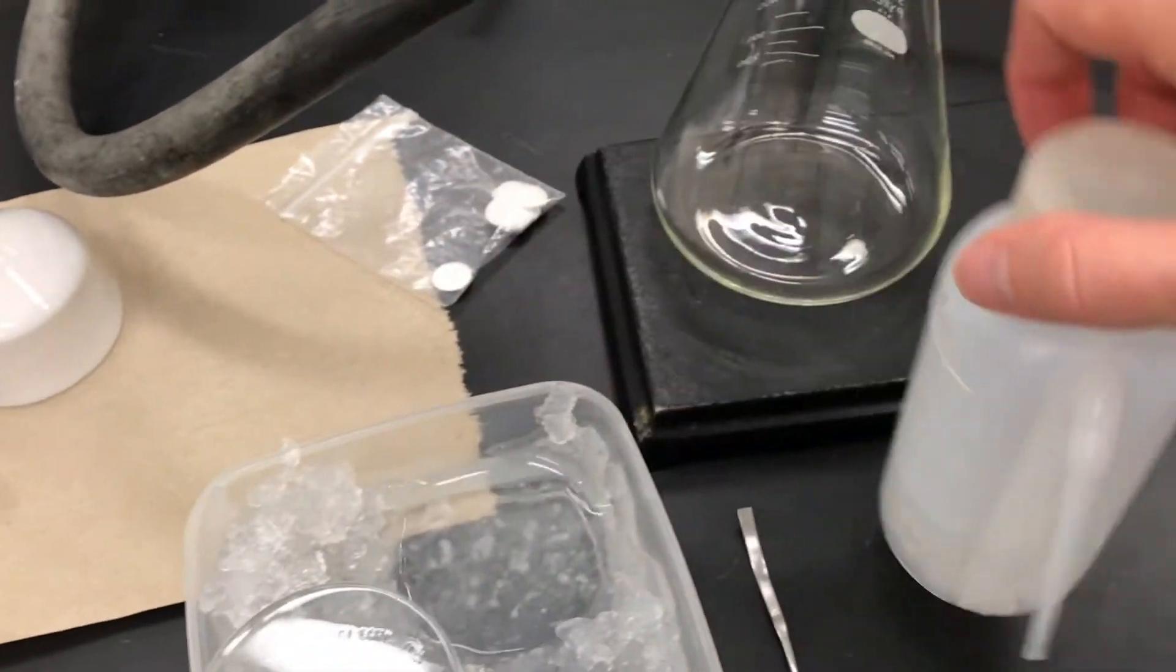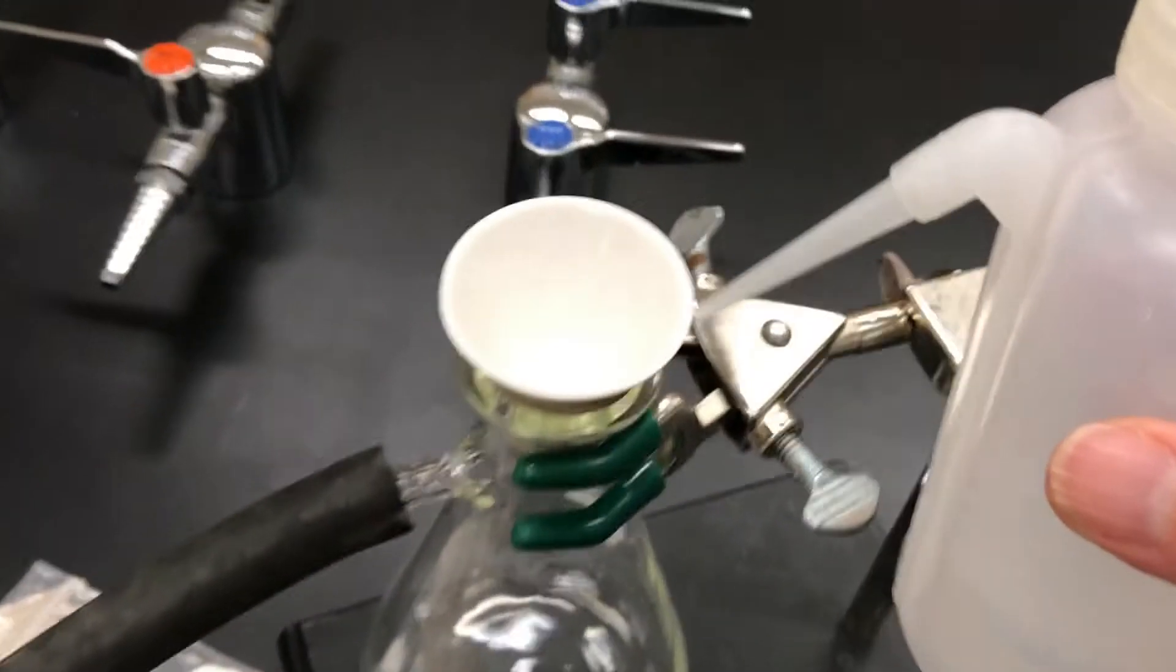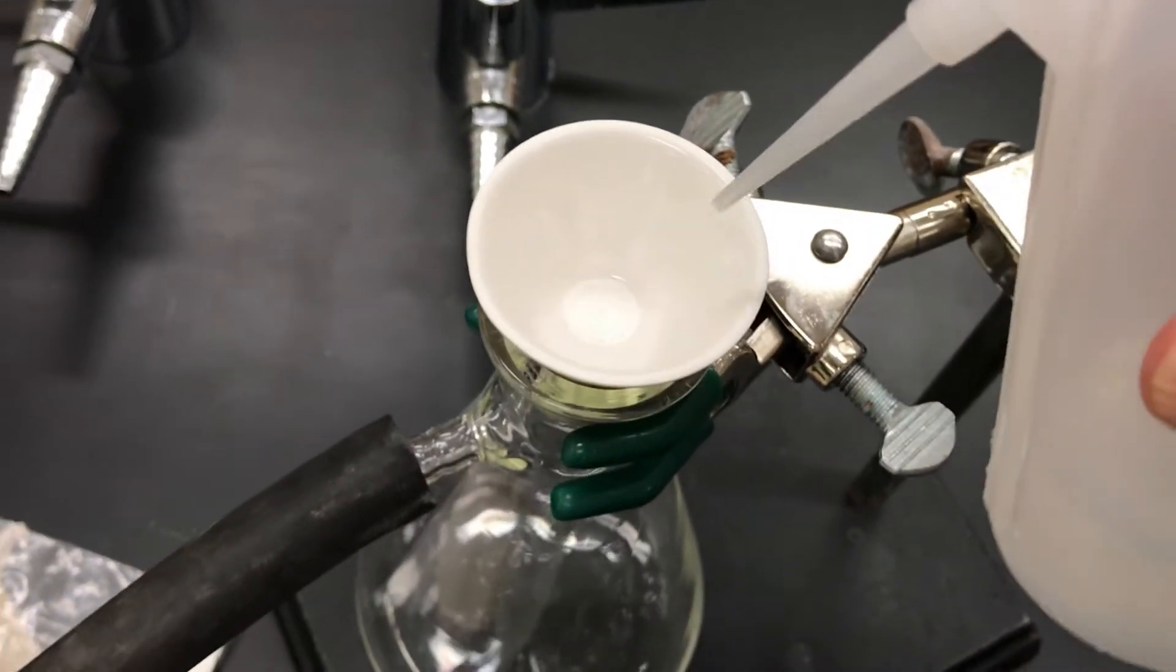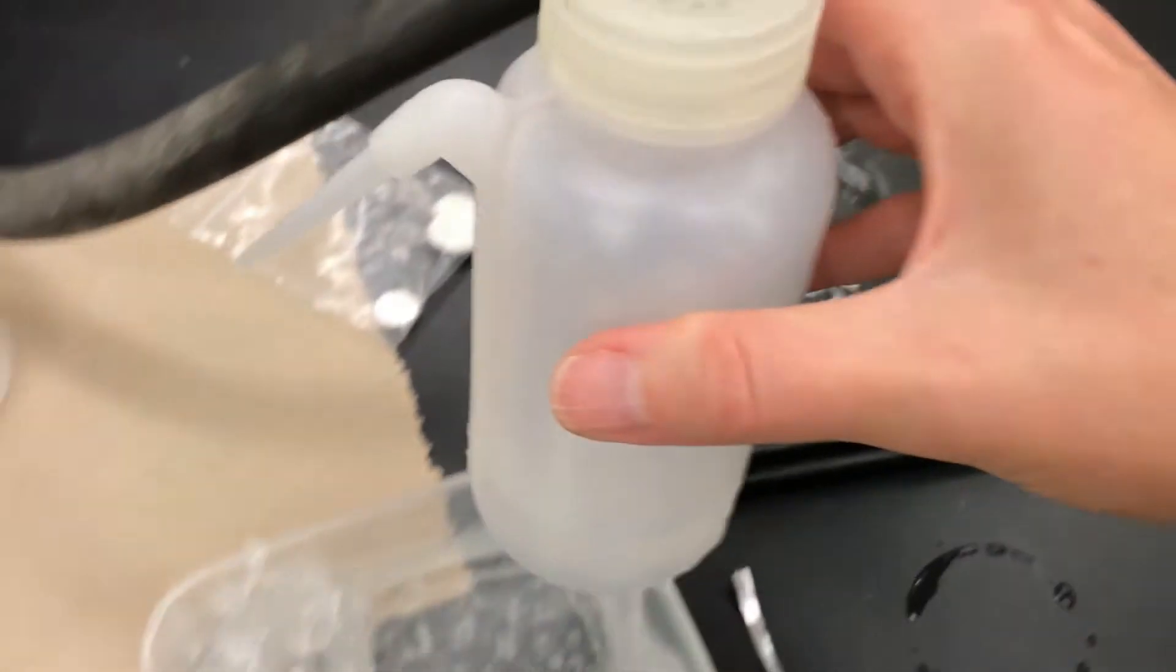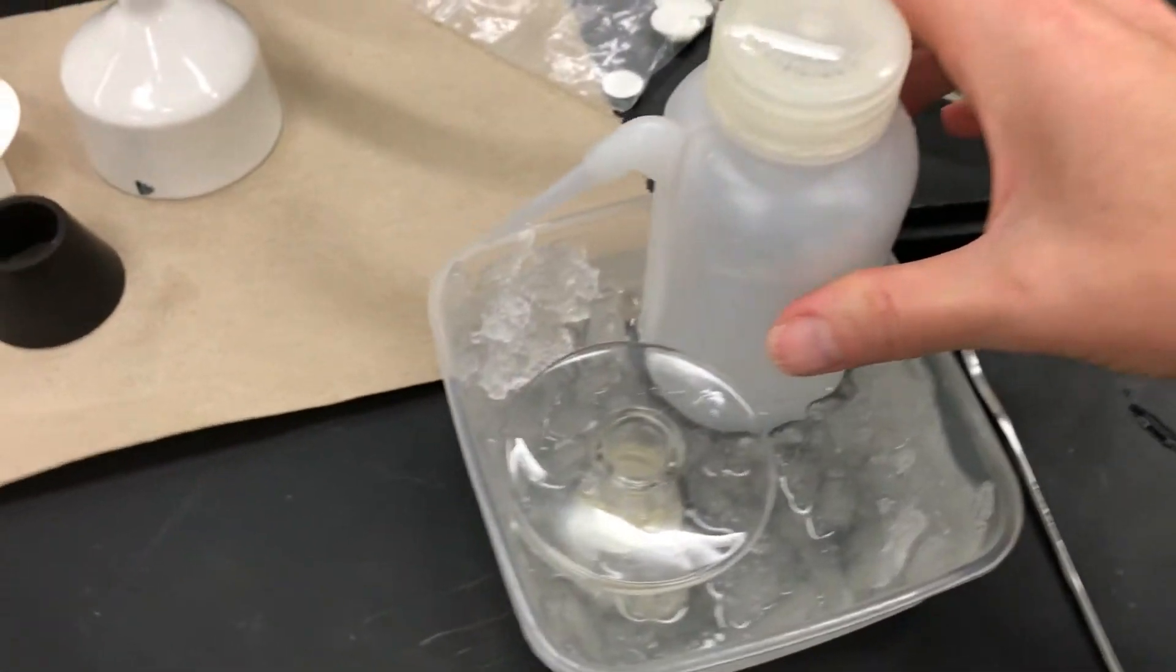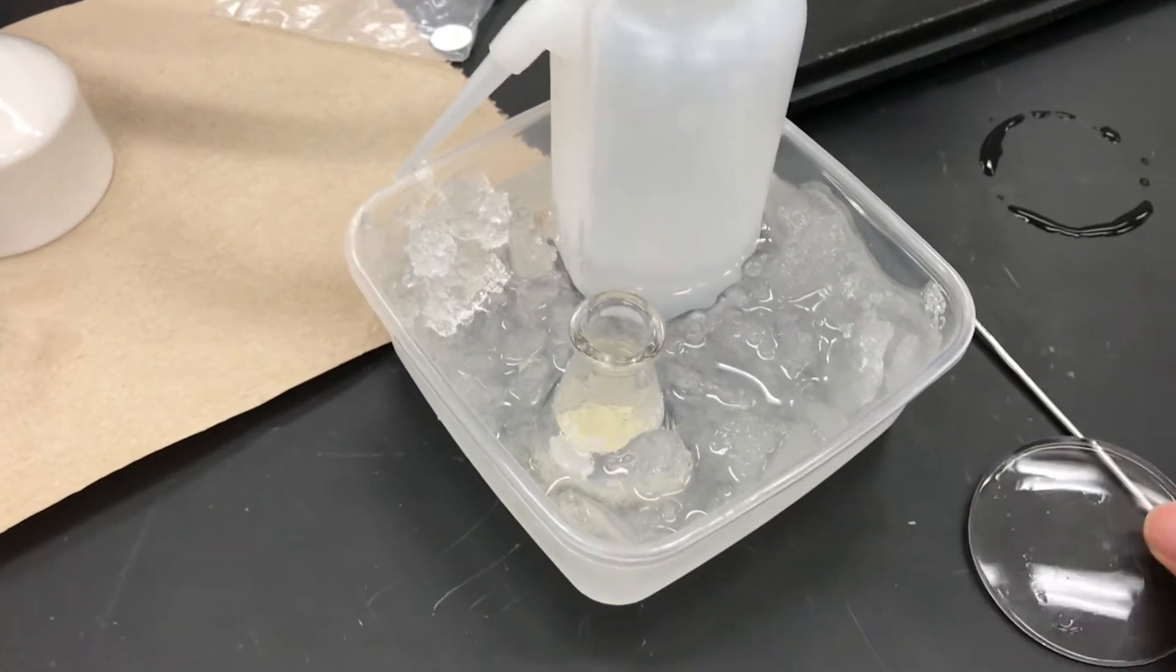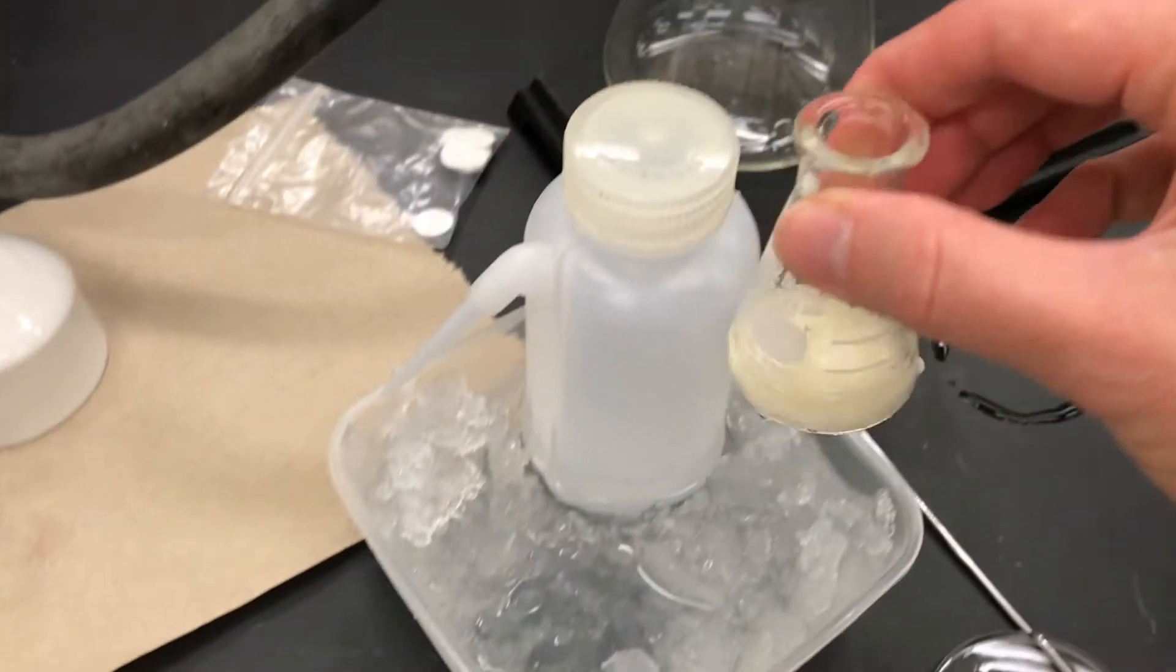Then you take some of your solvent and you first add some of that to the funnel and wet the filter paper. That liquid is going to drain out, but the point is that it holds the filter paper very securely onto the funnel, and now we're ready to start filtering.